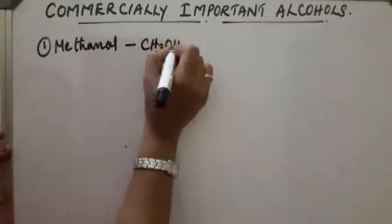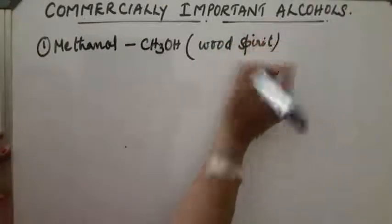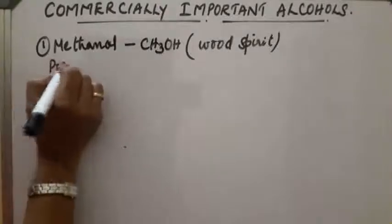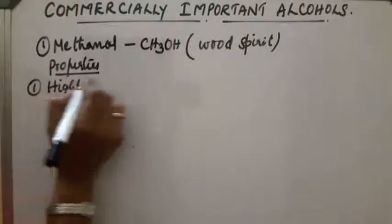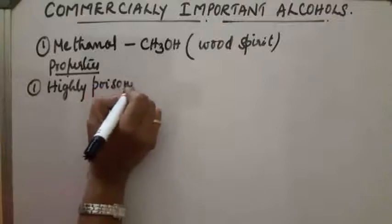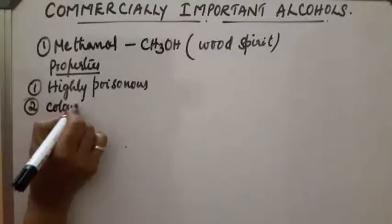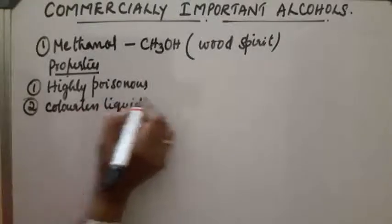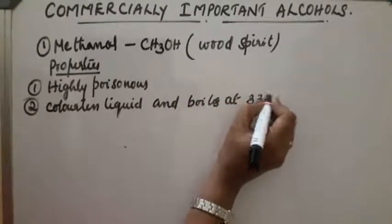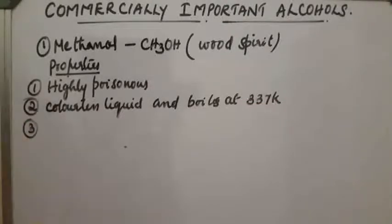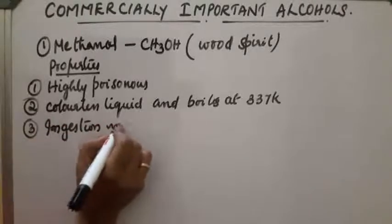CH3OH is also called wood spirit. Its properties: first, it is highly poisonous in nature. Second, it is a colourless liquid and boils at 337 Kelvin. Third, ingestion in small quantity causes blindness.